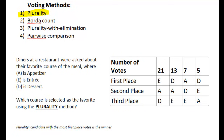Which course has the most votes? In the plurality method, as you can see down here, it's the candidate that has the most first place votes, and that's the key. So we really only need to concentrate on this row right here, and only this row — the first place votes.